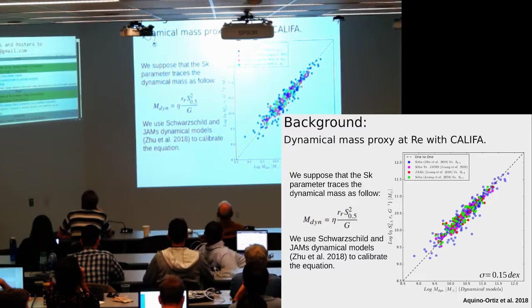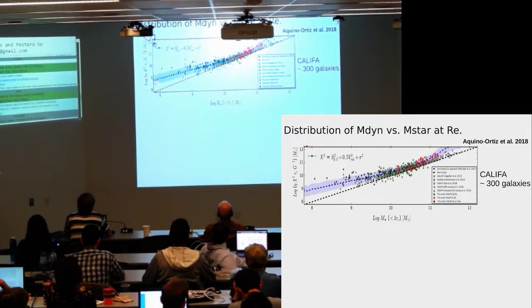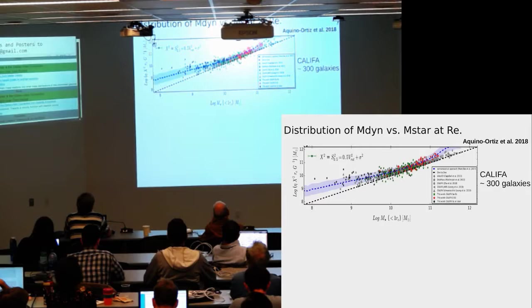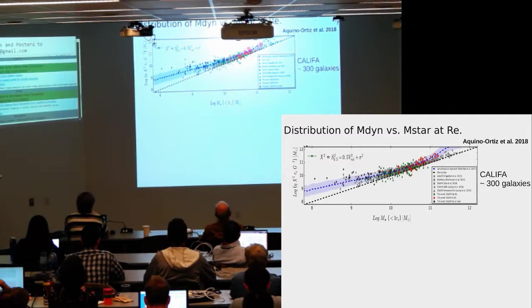In this plot, I show the distribution of dynamical masses at one effective radius versus the stellar mass also at one effective radius, comparing with the semi-empirical modeling by Rodriguez-Puebla and collaborators, represented by the blue dashed line and blue shaded region. Two important results: first, we are in agreement with the semi-empirical modeling; and second, galaxies at low stellar masses and galaxies with high stellar masses at one effective radius appear to be more dark-matter-dominated than galaxies with intermediate stellar masses.